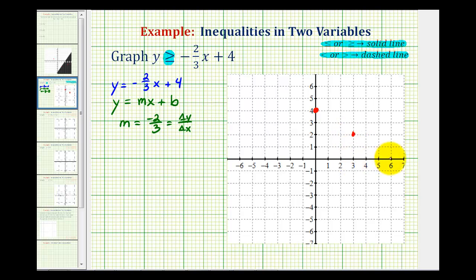Down 2, right 3, and so on. So our borderline passes through these 3 points. And again, we already said it's going to be a solid line. So it's going to look something like this.